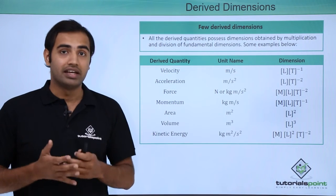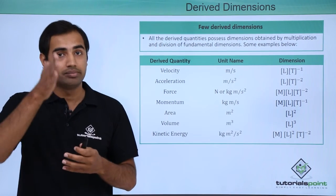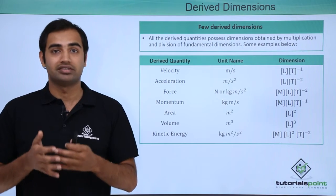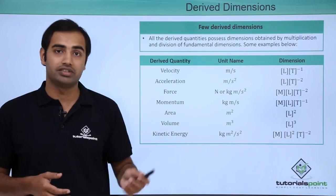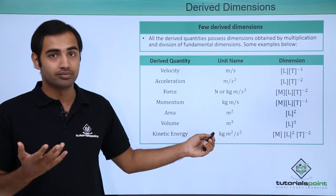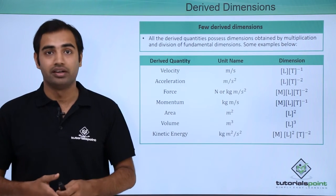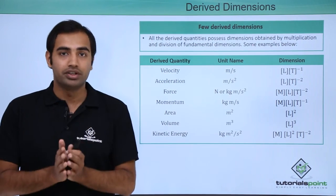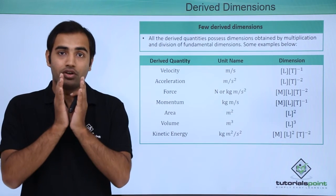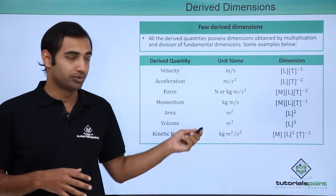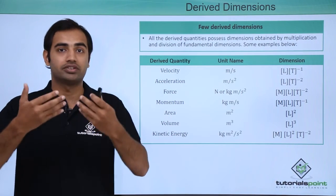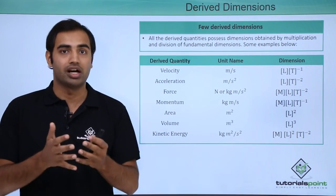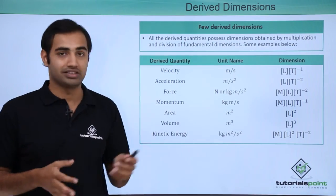Next, area is simply meter squared, so the dimension of area becomes L squared. Volume is meter cubed, and the dimension is simply L cubed. Kinetic energy, which we just derived from half mv squared, has units of Kg meter squared per second squared, and therefore the dimension is ML squared T raised to the power minus 2. As a student, you don't need to memorize these values because you can always calculate the dimension easily as long as you know the unit or the equation for the derived quantity.